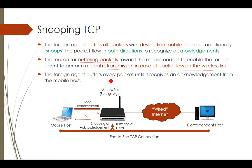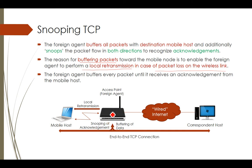The foreign agent buffers every packet until it receives an acknowledgement from the mobile host. He buffers every piece of data until an acknowledgement comes from the mobile host. Once the acknowledgement arrives, he may delete that packet from the buffer.